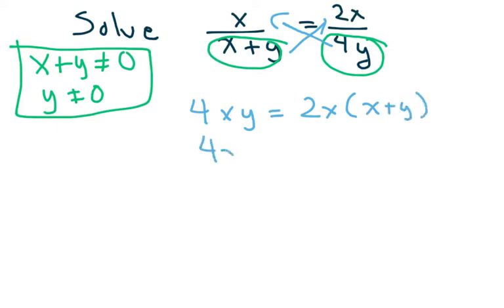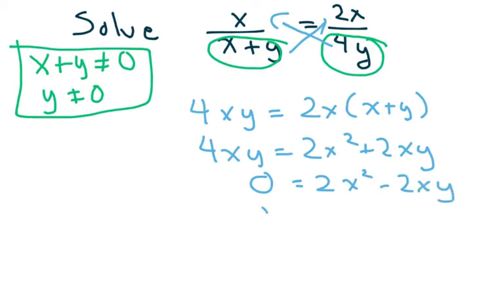I'm going to clean this up. And when I actually subtract, I'm going to get 0 equals 2x squared minus 2xy. I'm going to do the greatest common factor and factor out 2x. And I get x minus y.